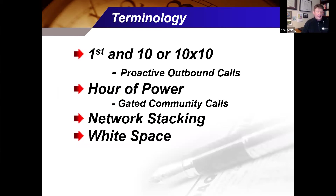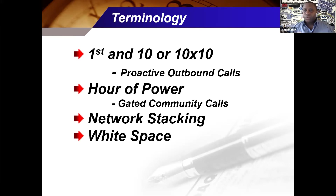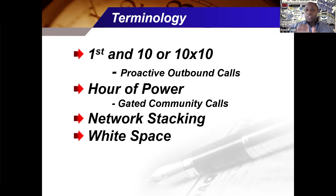Let's talk about First and Ten, Hour of Power, Network Stacking, and White Space. Starting at the bottom — White Space is your grace. Working backwards: First and Ten is very simple. These are your proactive outbound calls in the morning. I have a First and Ten memory jogger I made specifically for my business to make sure the night before, during my pre-leave routine, I'm getting those First and Ten calls ready by cultivating names onto a list.